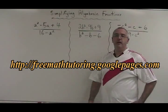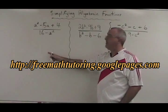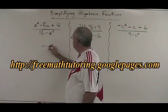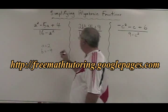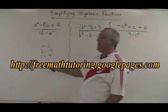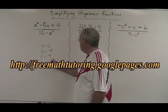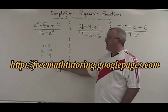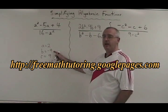The first step is to factor. I'm going to factor this numerator over here. A equals 2, B equals negative 9, C equals 9, and the product AC equals 18. What two numbers multiply to give 18 but add to give negative 9? Those numbers are negative 6 and negative 3.